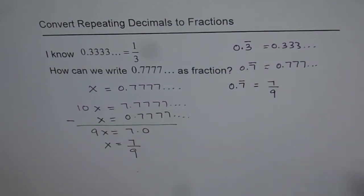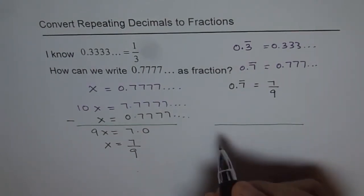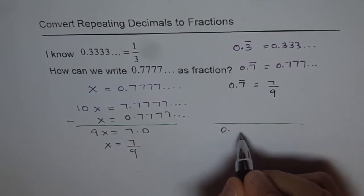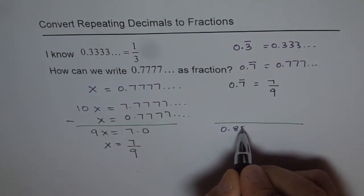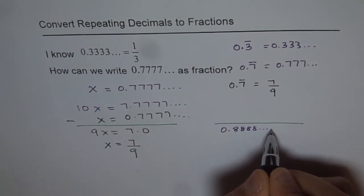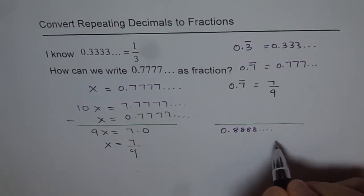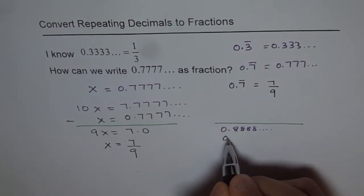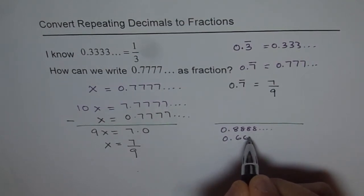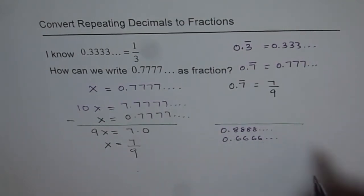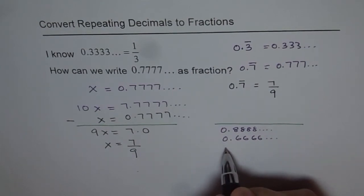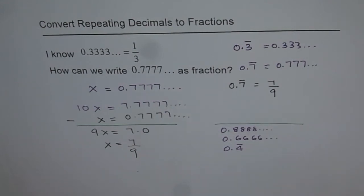It is perfectly fine. Now I would like you to practice and try these numbers. Convert these numbers, for example, 0.8888 like this. How can you write this as a fraction? Try, for example, 0.6666, right? And you remember, we can write them as 0.4 recurring. So try these numbers using this technique and let me know if you get them.